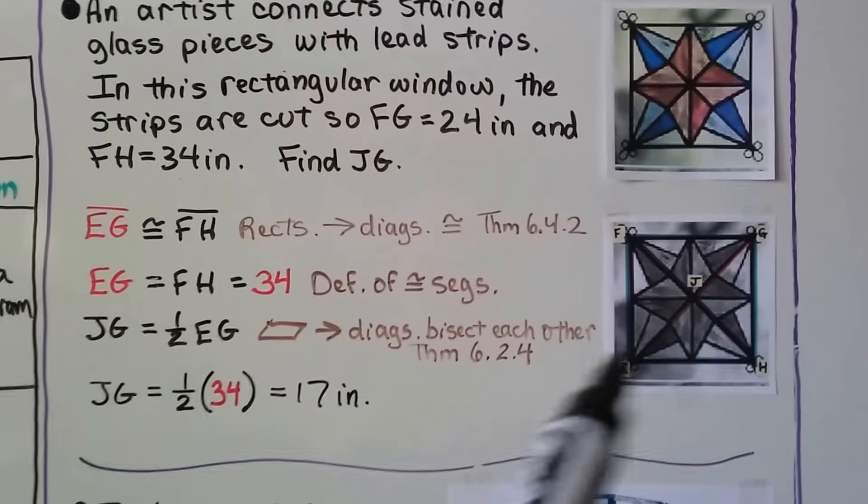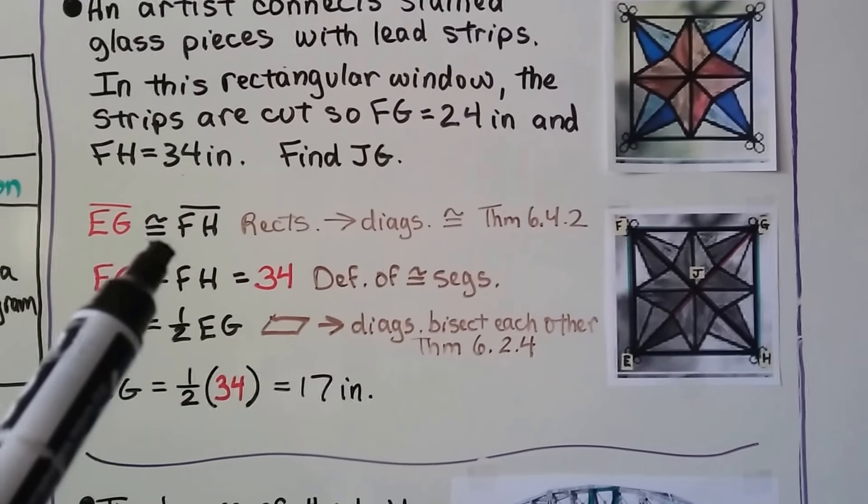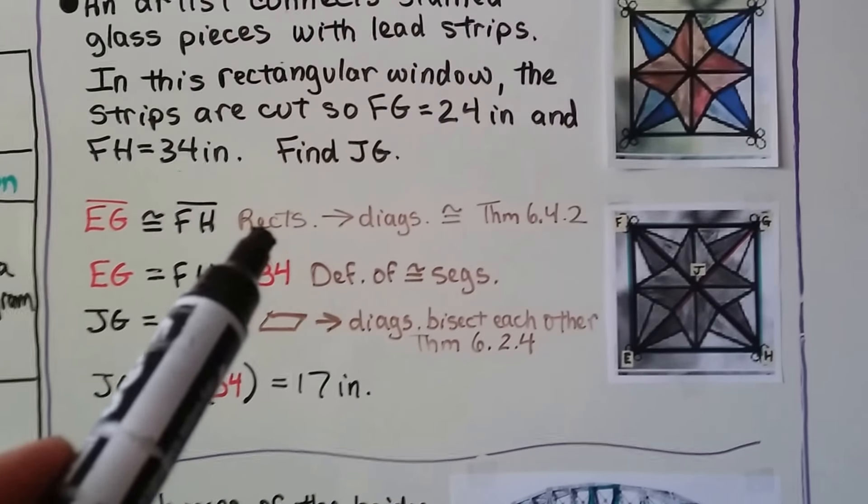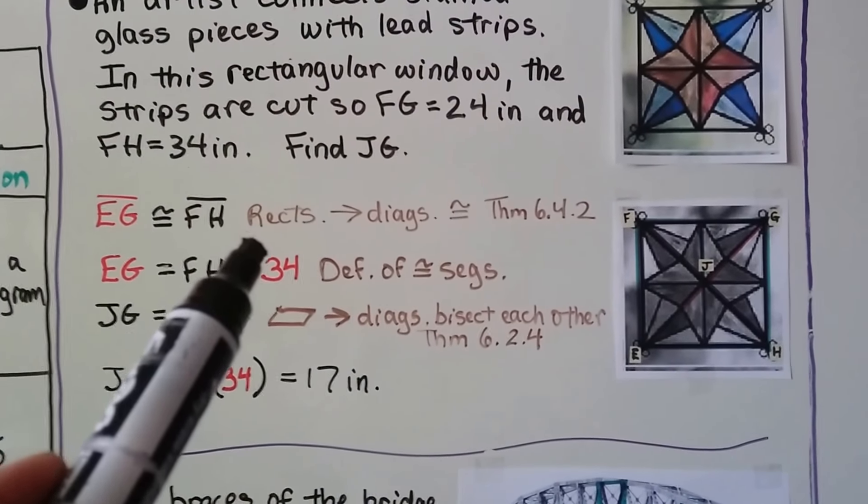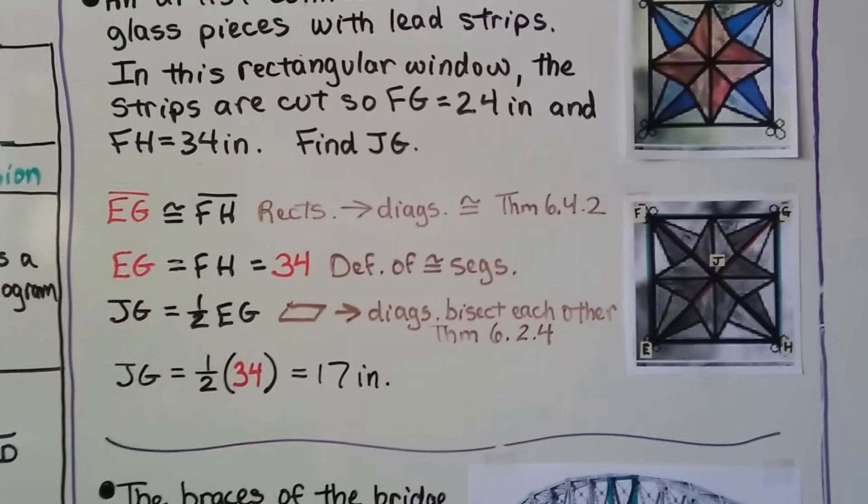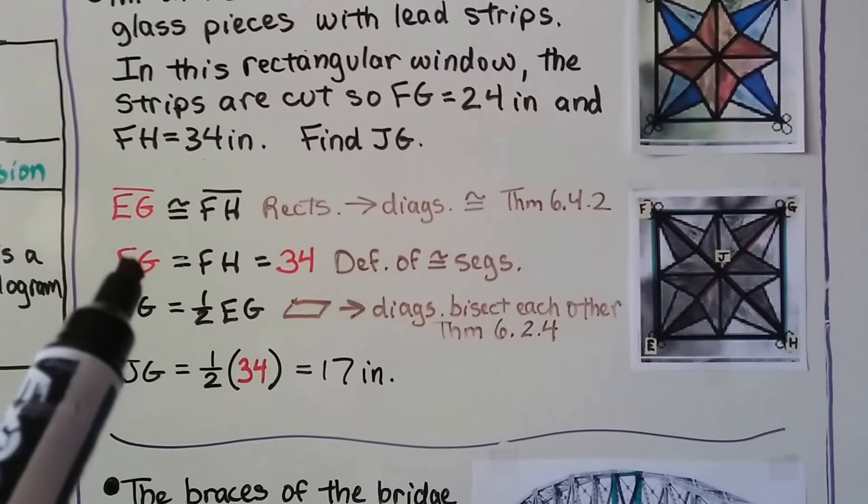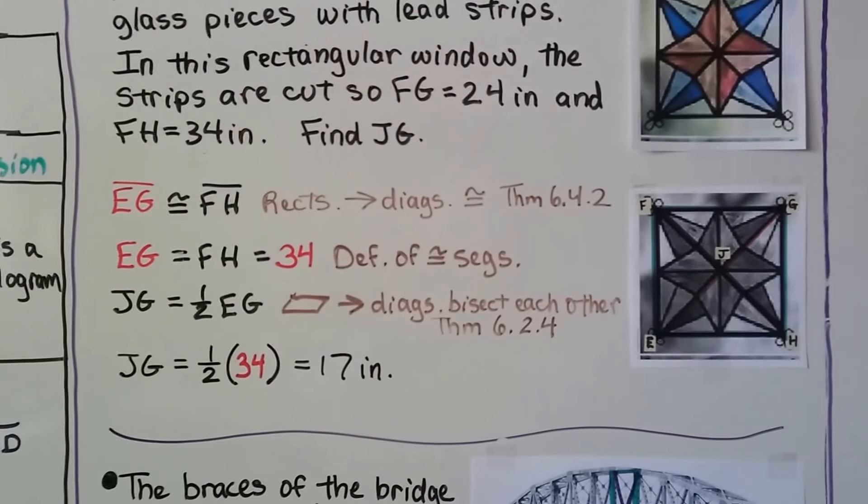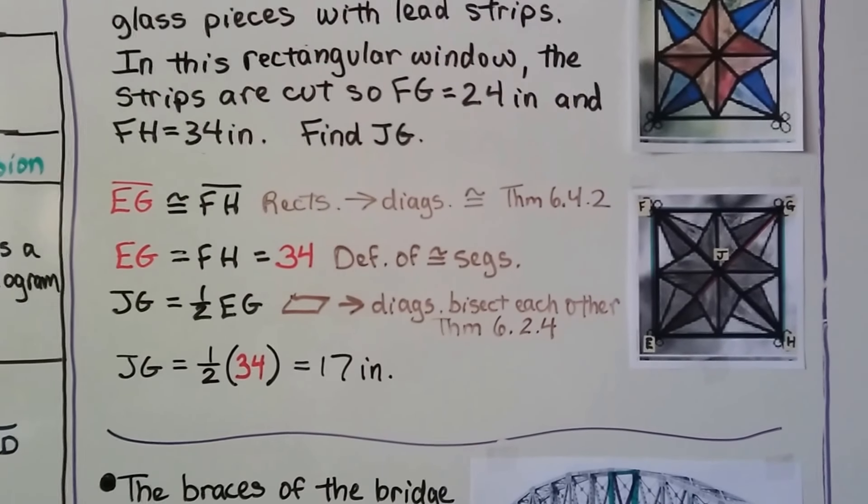Segment EG, that's this diagonal, is congruent to segment FH, this diagonal, because of theorem 6.4.2, that if it's a rectangle, then its diagonals are congruent. That means EG is equal to FH, and that's 34 inches, so EG is 34 inches. That's the definition of congruent segments.